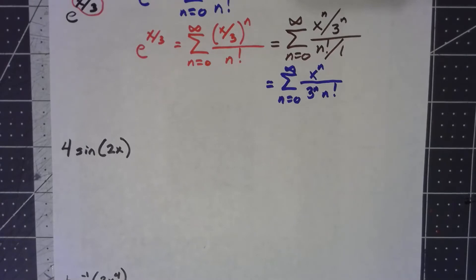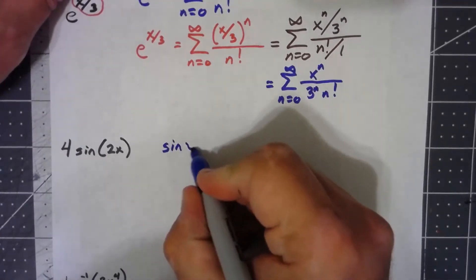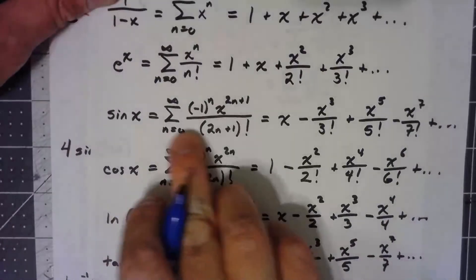4 sin 2x. So we'll start with the power series for sine of x. Sine of x is here. It's the one where you're only getting the odd powers.